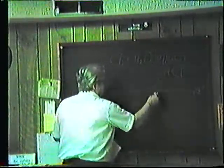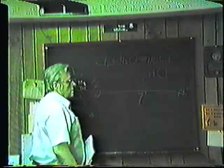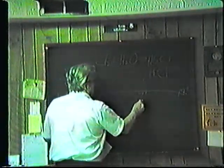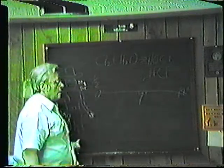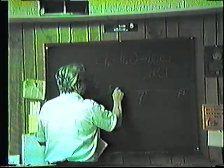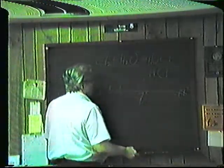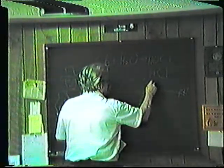Now what is pH? pH is compared to a 14-inch ruler, and the halfway point would be 7, which would indicate that we have neutral water. From 7 down to 0 we get progressively acid water, and as we go from 7 to 14 we progressively make basic water.